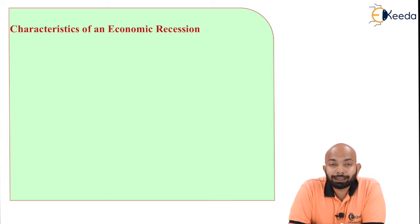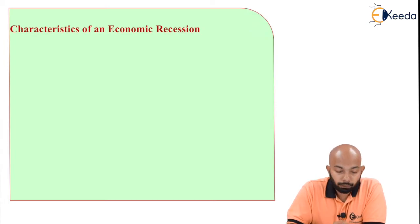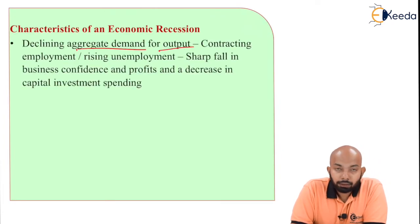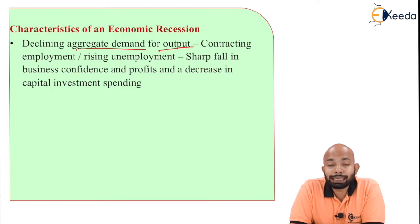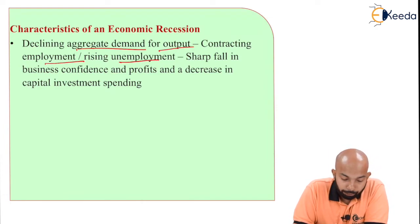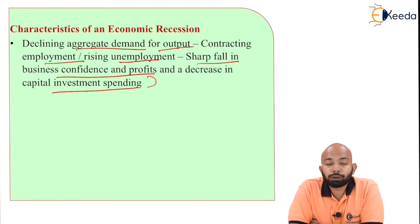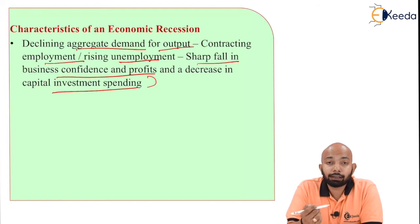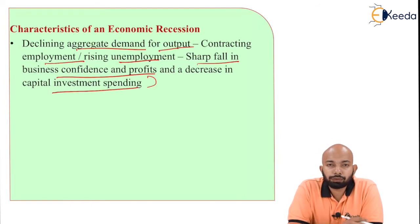The characteristics of economic recession or slowdown are as follows. There is declining aggregate demand for output — in a boom demand increases, but here demand is declining. There is contracting employment, rising unemployment, a sharp fall in business confidence and profits, and a decrease in capital investment spending. Because of all these things, you know you are going to lose your job, the market won't have much money, investment will be very low, and that will lead to a loss of economic growth.